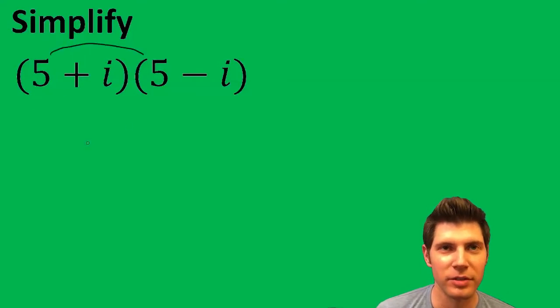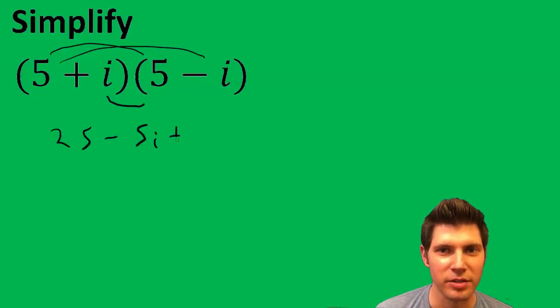So 5 times 5 is 25, 5 times negative i is negative 5i, i times 5 is positive 5i, and i times negative i is negative i squared.